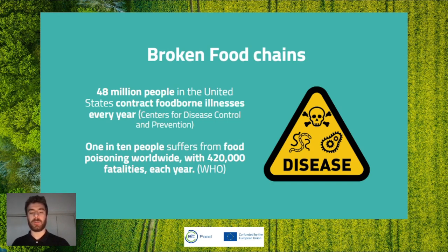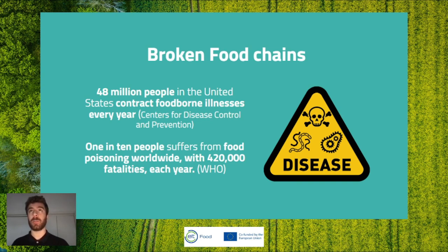One of the main reasons blockchain is being adopted so rapidly in this space is the many cases of illness stemming from inefficiencies in food chains. The CDC estimates around 48 million people in the U.S. contract foodborne illnesses every year, and 1 in 10 people suffer from food poisoning worldwide, causing around 420,000 fatalities. One of the most well-known examples was the E. coli outbreak in 2006, when people lost trust in spinach and it took around two weeks to identify the source. With blockchain it would have taken seconds and saved many lives and much money.